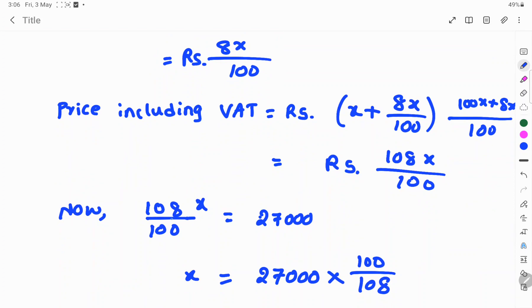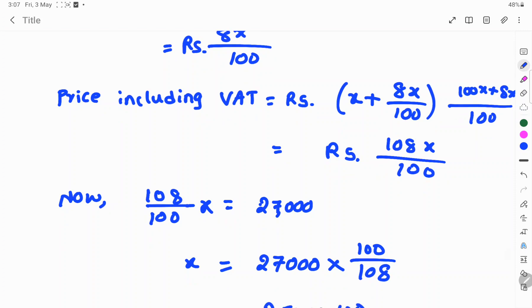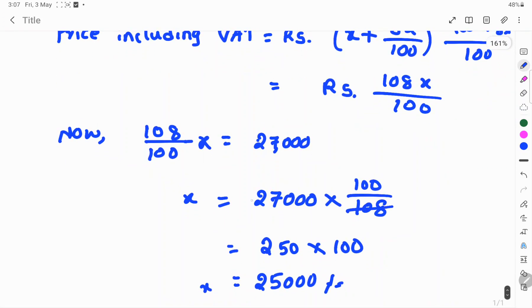Now, 108x by 100 is equal to 27,000. To find the x value, x is equal to 27,000 into 100 by 108. 108 cancels 27,000 in 250 times. So, 250 into 100 is 25,000.